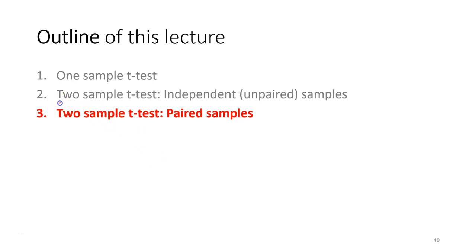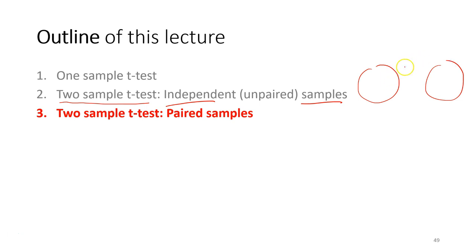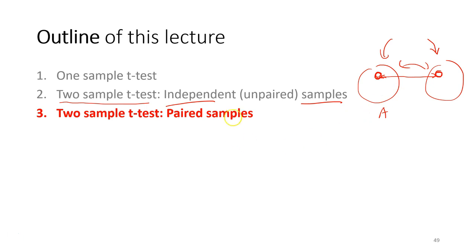In the previous lecture you learned two-sample tests for independent samples. One of the assumptions is that the two samples are from two populations which have nothing to do with each other — they are independent. The measurement from one observation in population A will not have any implication for another measurement taken from population B, and the observation unit is different.